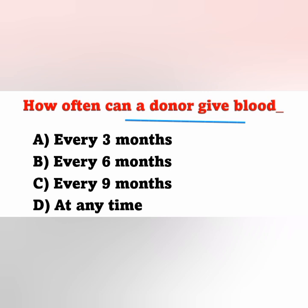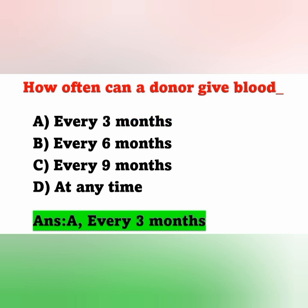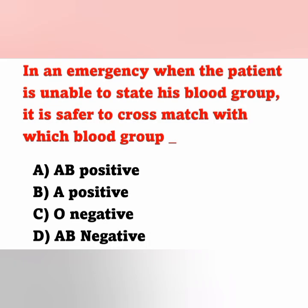Question 8: How often can a donor give blood? Options: A) every 3 months, B) every 6 months, C) every 9 months, D) at any time. The correct answer is option A — a donor can donate blood every 3 months, meaning the interval between donations is three months.